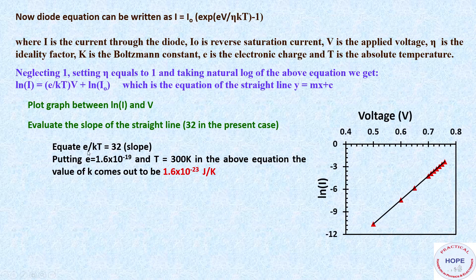Now we'll equate this value of slope 32 to E by kT. Now we know the values of E and T. So the value of k comes out to be about 1.6 into 10 raised to the power minus 23 joules per kelvin. It is slightly higher than the theoretical value.